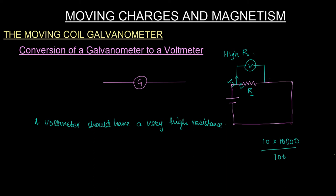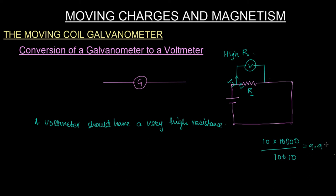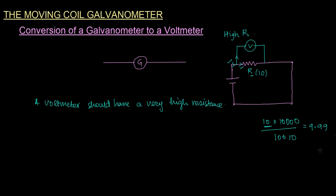The net resistance is product over sum: 10 × 10,000 divided by 10,010, which equals 100,000 divided by 10,010, giving approximately 9.99 ohms. This is not much different from the original 10 ohms. If you make the parallel resistance even higher, the net resistance gets closer and closer to 10.